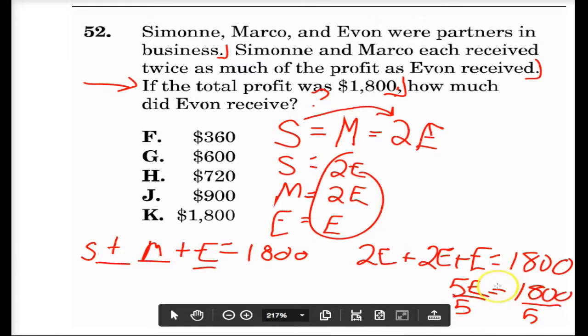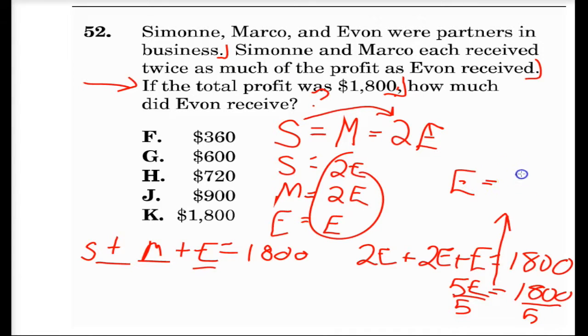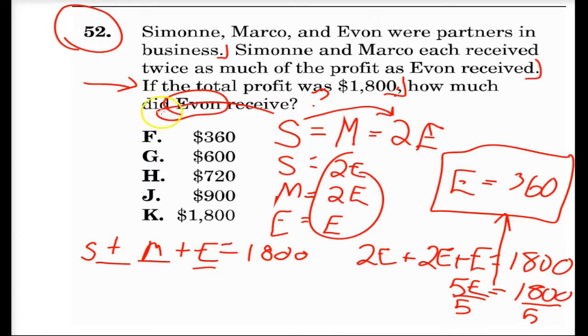And you find out that E equals 360. Now we know that E equals 360, we read the last part of the question. And since it's a nice early problem in the math, they're not tricking us too much. They just want to know how much Evan received.